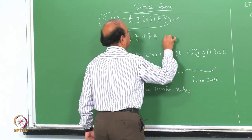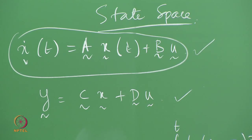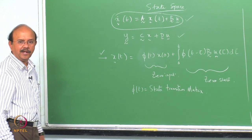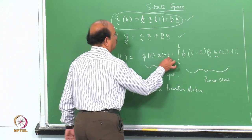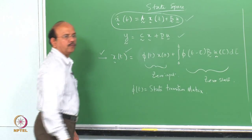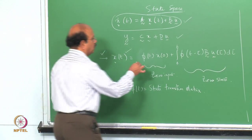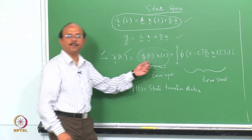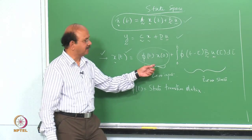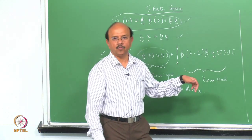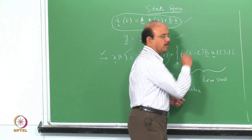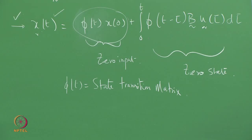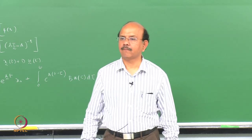That is the fundamental equation and that is the output. We went through x(t) and derived this. Remember that we had the Laplace transform. Ultimately for x, we have 2 terms: one is what is called the zero input term - purely because of the initial condition - and the other is the zero state term, which is due to the input u. The response consists of both the initial and input conditions.